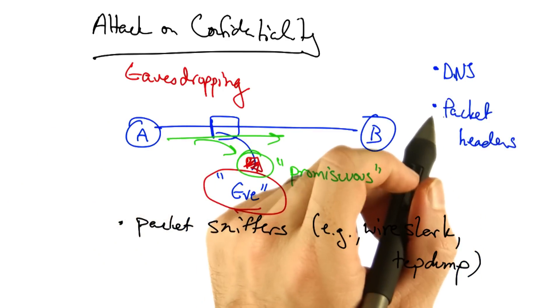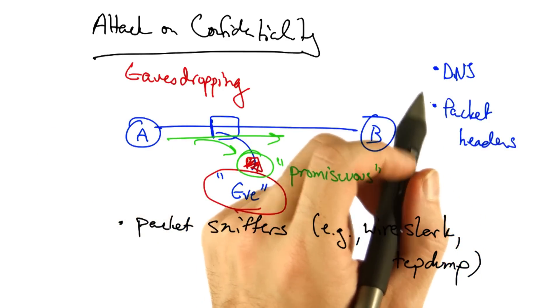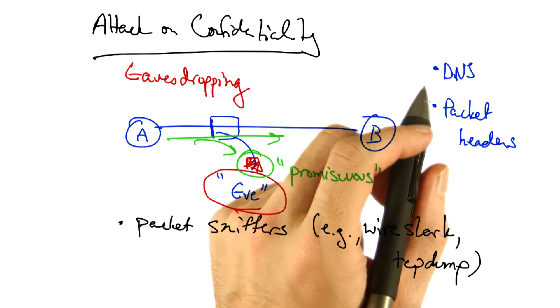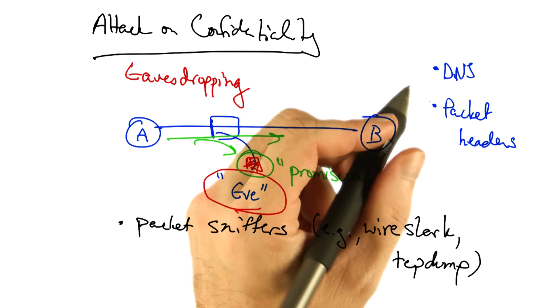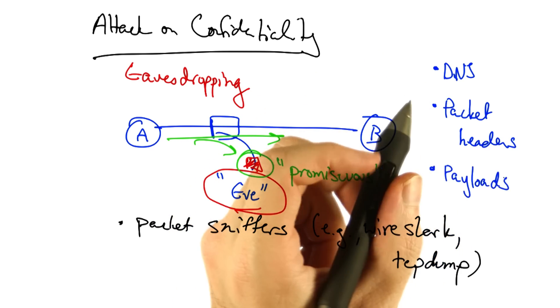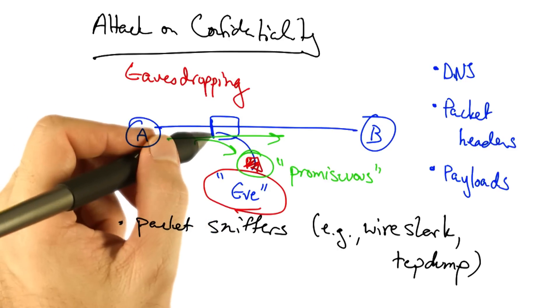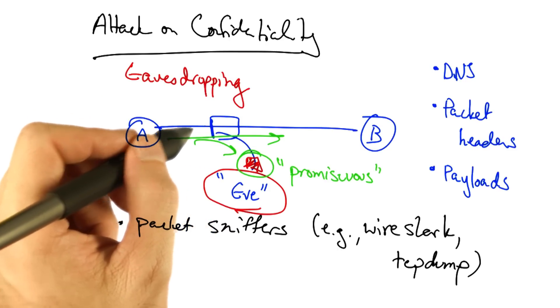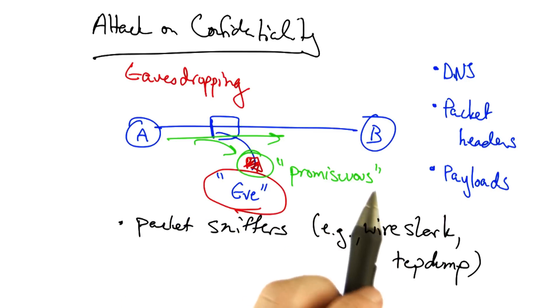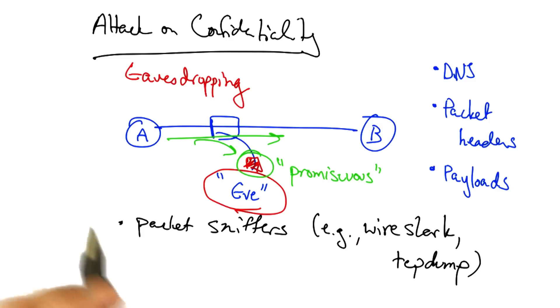The ability to capture packet headers might give the attacker information not only about where you're exchanging traffic, but what types of applications you're using. And the ability to see a full packet payload would allow an attacker to effectively see every single thing that you are sending on the network, including content you're exchanging with other people, such as private messages, email communication, and so forth.